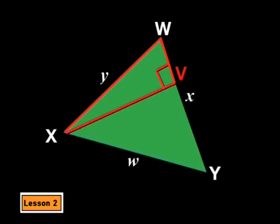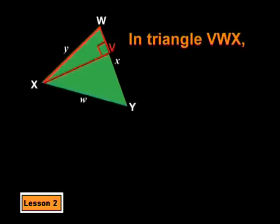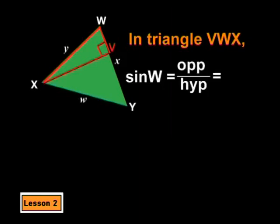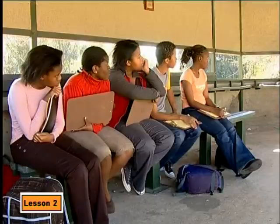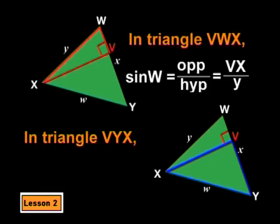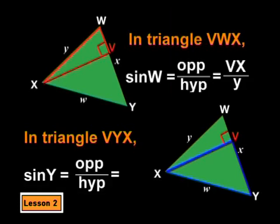We can define the length of V, X using the trig in triangle V, W, X. We can also define V, X using the trig in triangle V, Y, X. Let's look at triangle V, W, X, which is sine W equals opposite divided by hypotenuse, which is equal to V, X divided by y. Now, let's look at triangle V, Y, X, which is sine Y equals opposite divided by hypotenuse, which is equal to V, X divided by w.